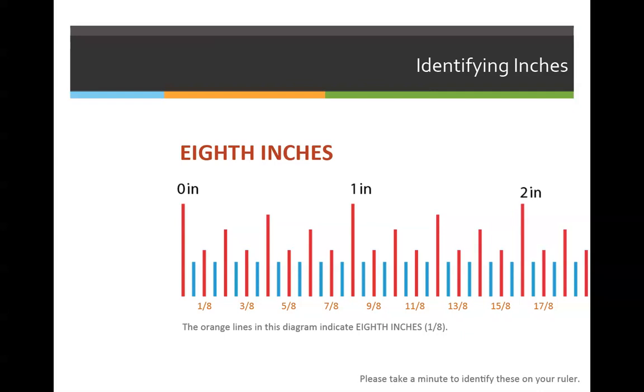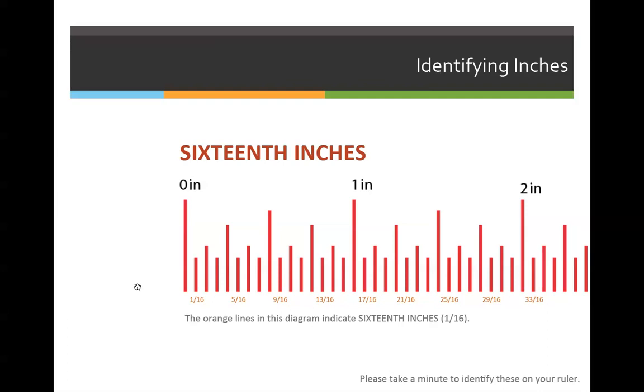The next line down are eighths of an inch. And again, you have to include the eighth of an inch and all of the lines that are taller than it. And the last line are one-sixteenth of an inch. If you have another line in between sixteenths right here, and you see a lot of little tiny lines, you have a one-thirty-second of an inch on your ruler. You're going to have to ignore that for our class. We're only going to go down to one-sixteenth of an inch.